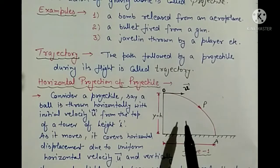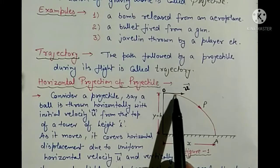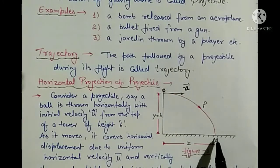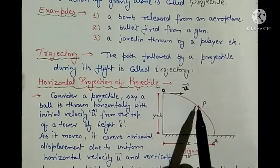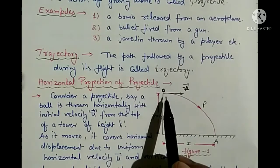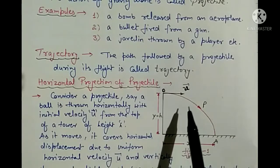So what happens — this path will be followed and the stone will hit the ground. This path OPA is what we call the trajectory.